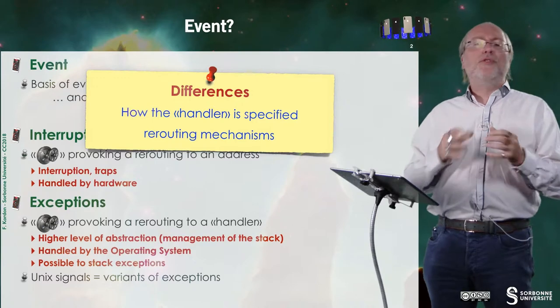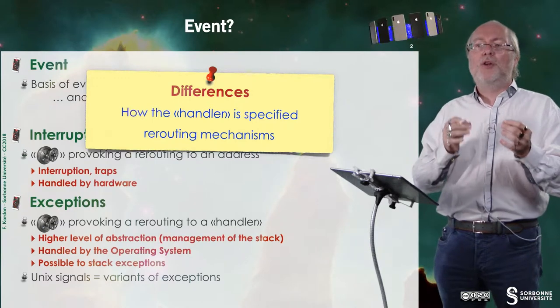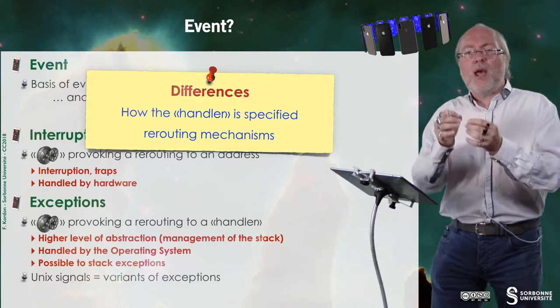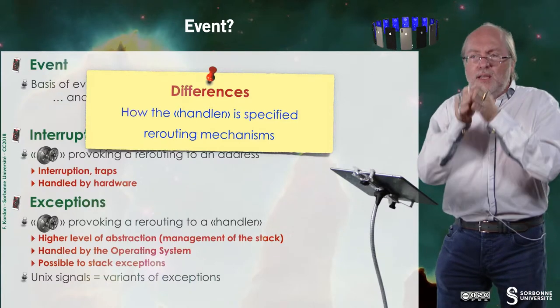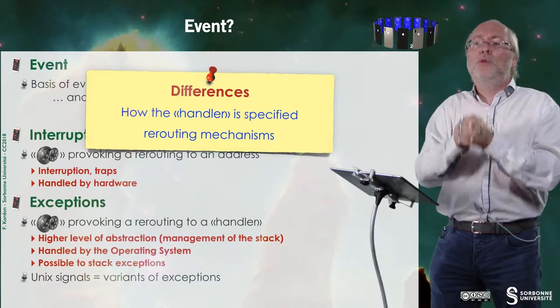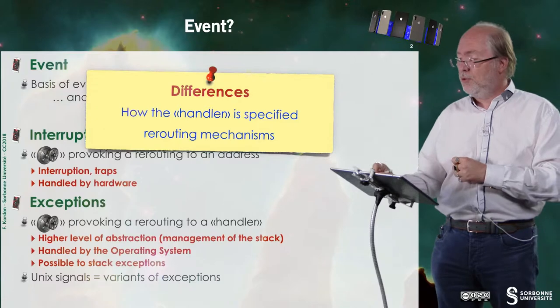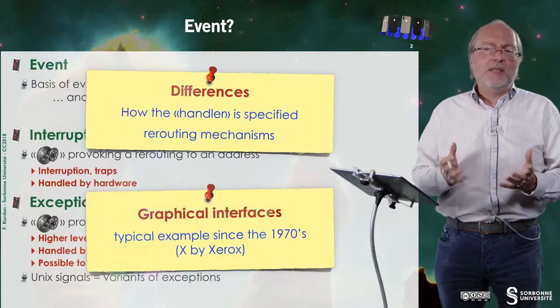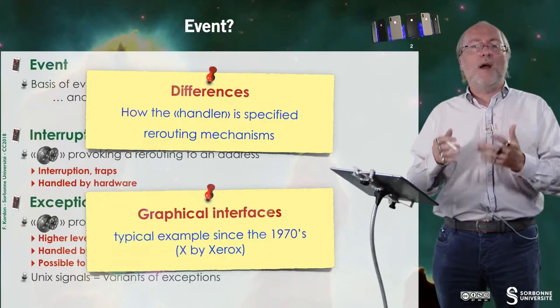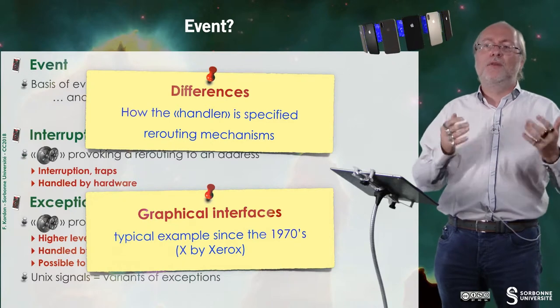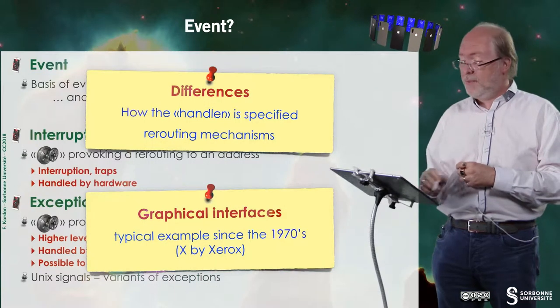The difference between the various types of exceptions is the way the handler is specified — the way you specify that if an event occurs you will go there. You have these handlers and a way to specify these rerouting mechanisms. A typical example is graphical interfaces, and this goes back to the very beginning, from the 70s, when the origin of X11, which is now the standard graphical user interface on Unix, was created by Xerox.